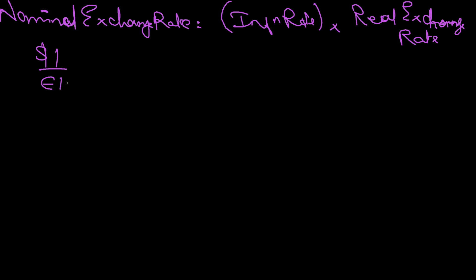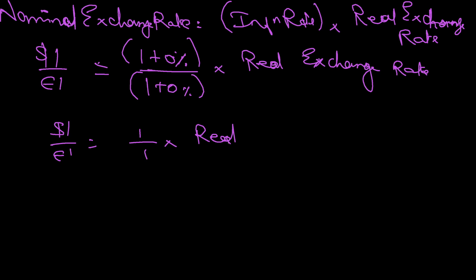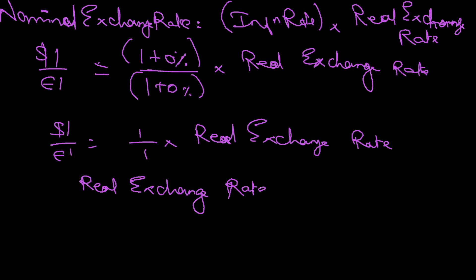Let's say one dollar equals one euro, and the inflation rate in both countries is zero percent — so it is growing at zero percent. In that case, nominal exchange rate equals one divided by one times real exchange rate, therefore Real Exchange Rate = 1 dollar for 1 euro.